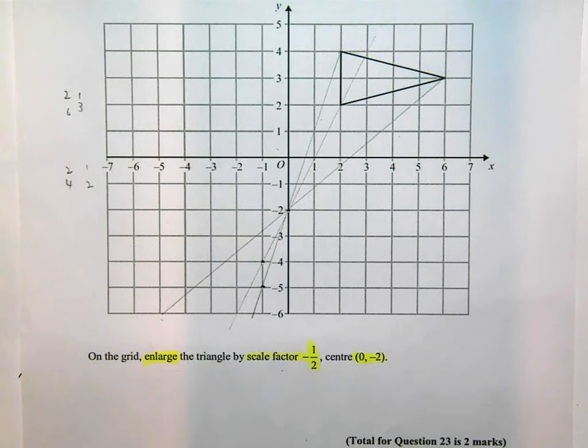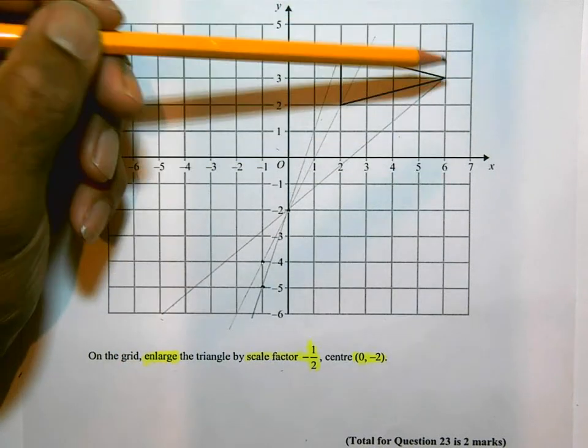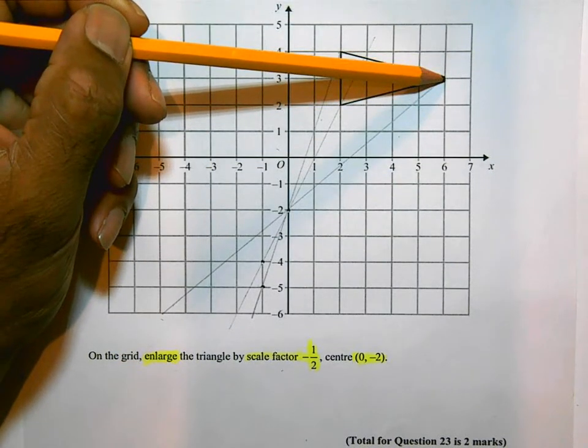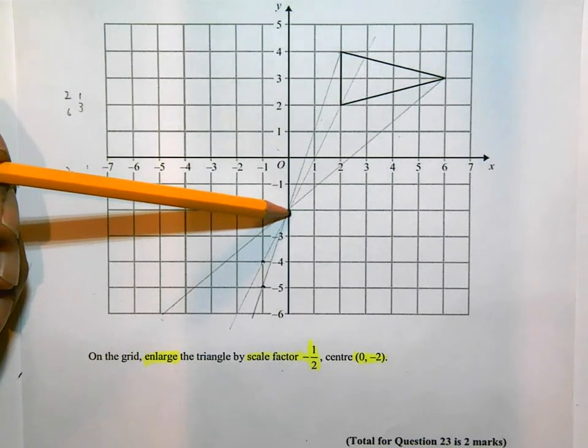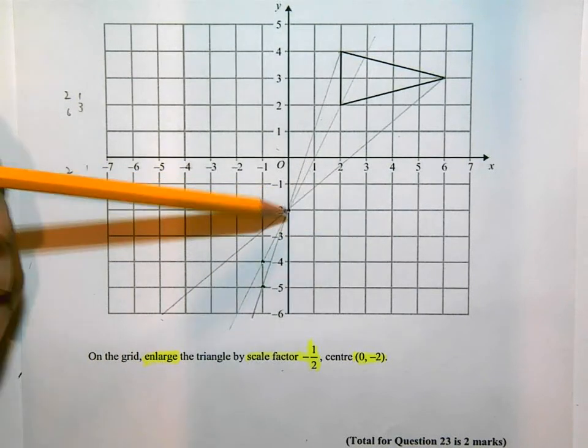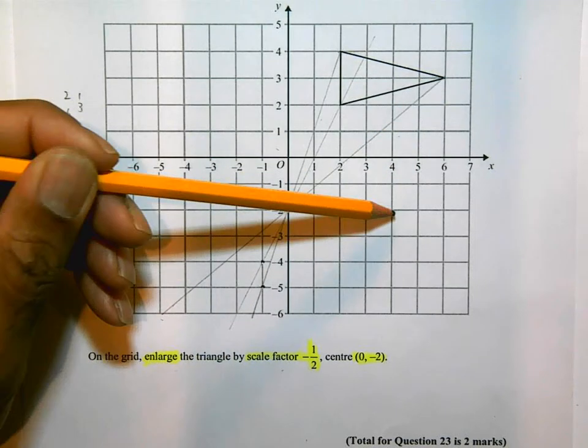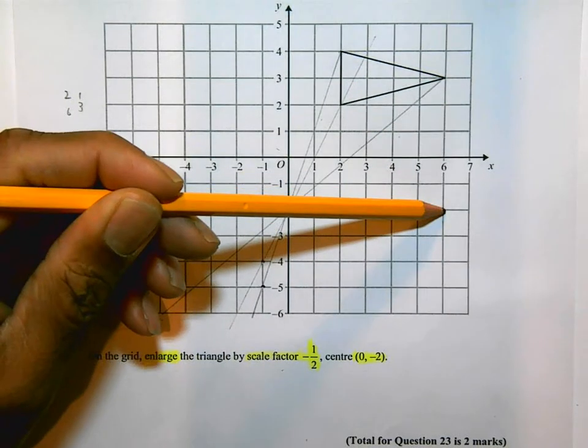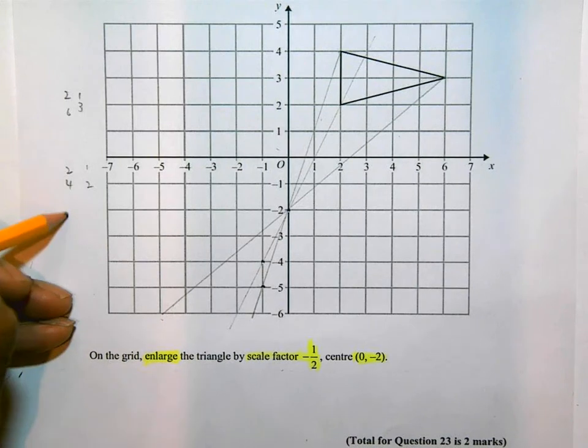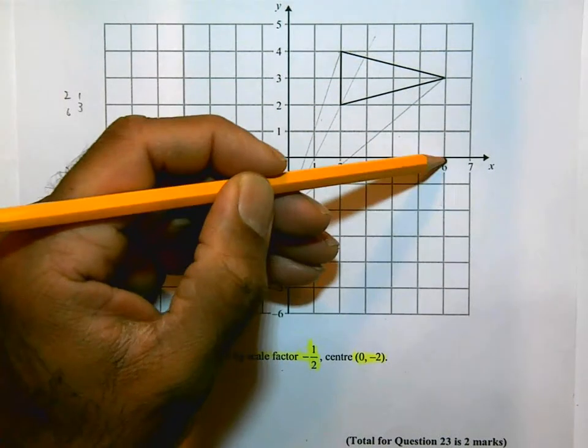And finally, this corner here. Take my time with this. From the center of enlargement to there, it's going to be 2, 4, 6. So 6 across. And then 2, 4, 5. 5 up.